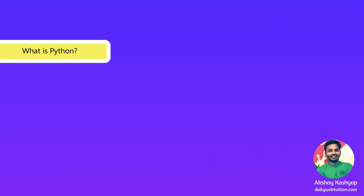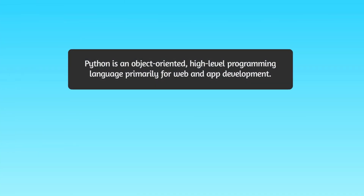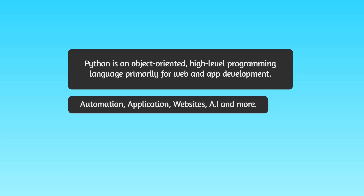So the first question is: what is Python? Python is an object-oriented, high-level programming language primarily used for web and app development. Python is relatively simple, so it's easy to learn since it requires a unique syntax that focuses on readability. Developers can read and translate Python code much easier than other languages. Python can be used in automation, applications, websites, AI, and more. Python can be used to connect database servers, modify and read files.